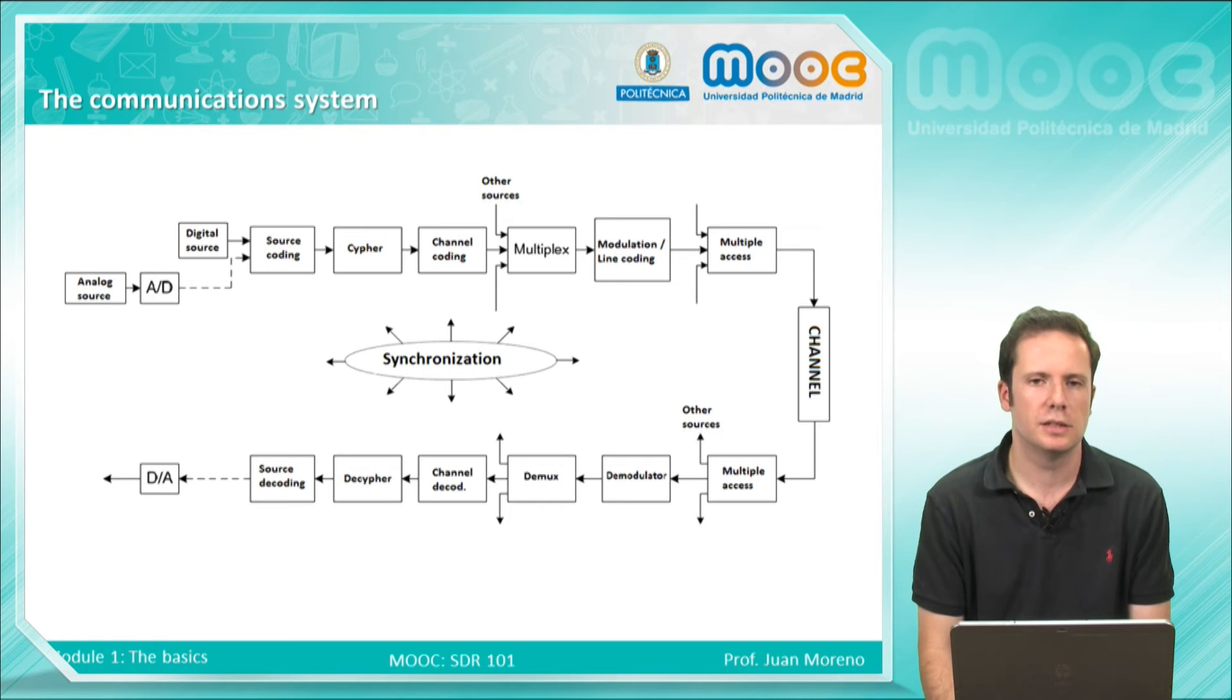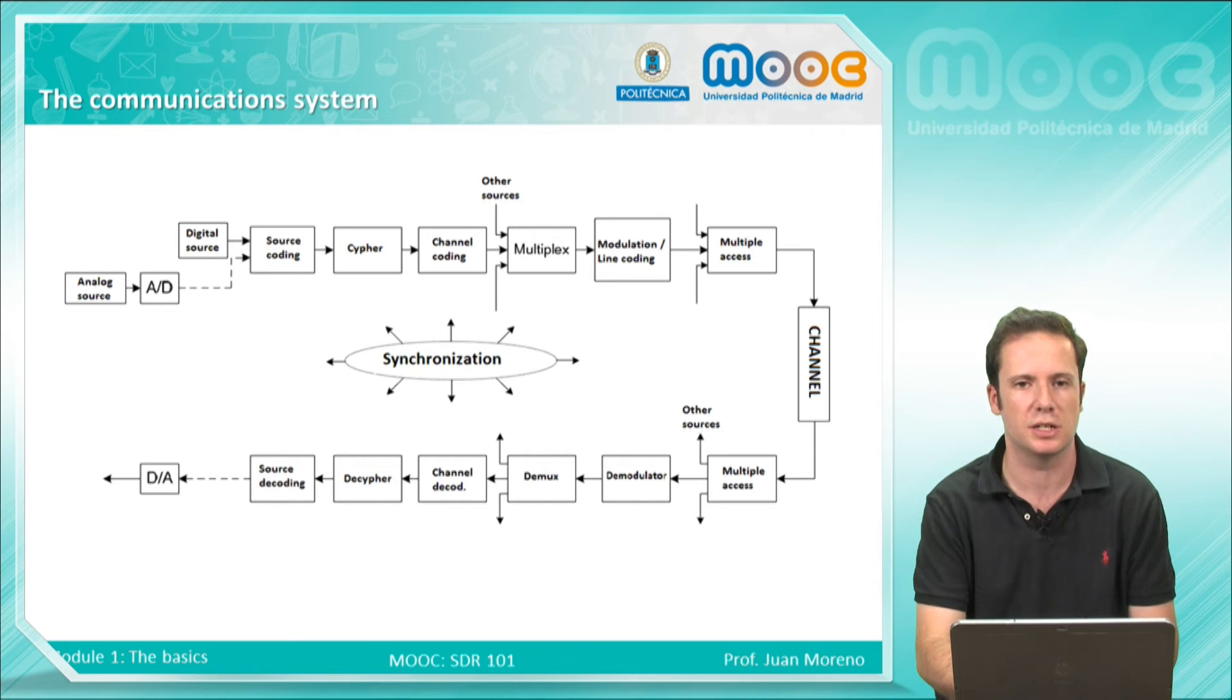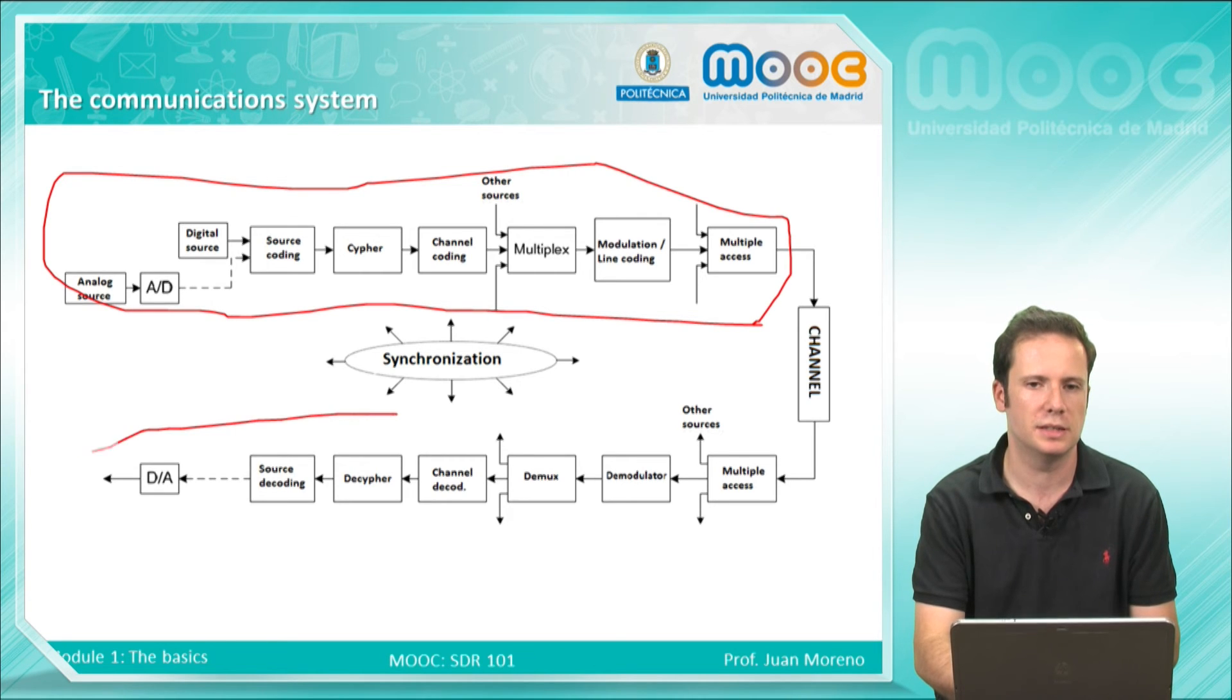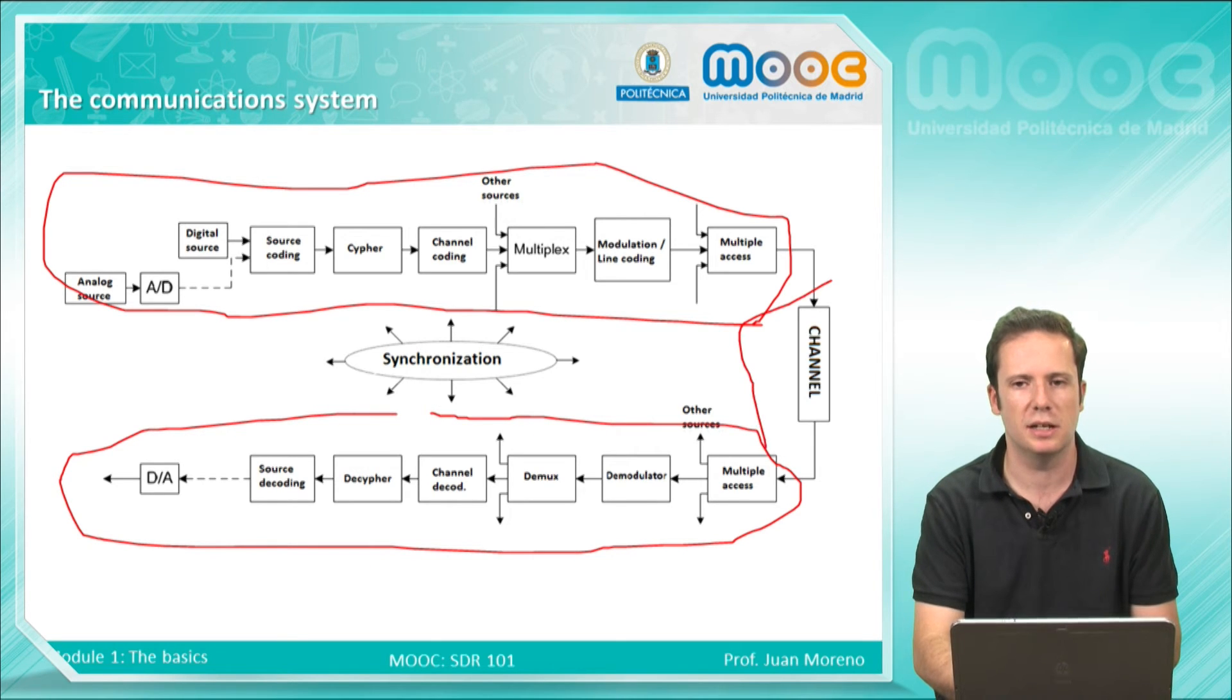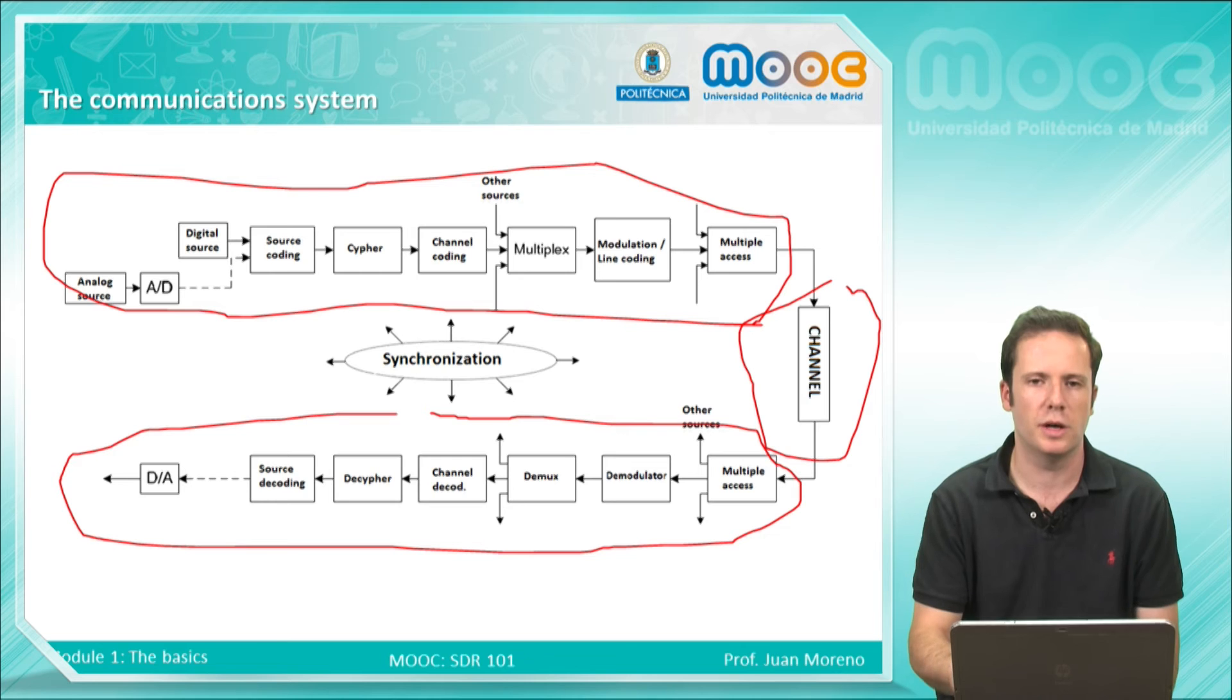This is the complete communication system. Here every block involved in the communication process is depicted. You can see that it's the same approach as before, but with more detail. We have an analog source, a digital source, the source coding, the ciphering if you want to encrypt your signal, the channel coding, the multiplex, and so on - all these parts in the transmitter here have their counterpart in the receiver down here. And as we say always, the channel is between the transmitter and the receiver. In future videos we will see in detail each one of these boxes.